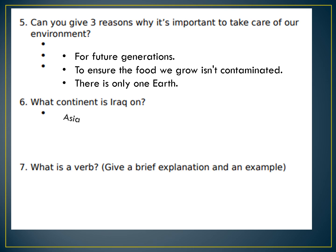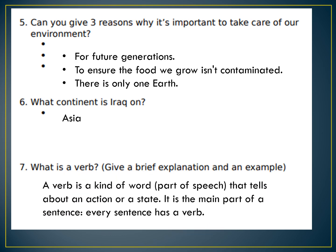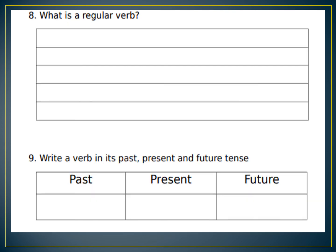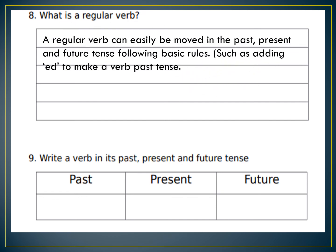What continent is Iraq on? Believe it or not — Asia. What is a verb? A verb is a kind of word, a part of speech, that tells about an action or a state. It is the main part of a sentence — every sentence has a verb. For example: I ran to school — ran would be the verb. What is a regular verb? A regular verb can easily be moved into past, present, and future tense following basic rules, such as adding -ed to make it past tense. Example: present — walk, past — walked, future — will walk.